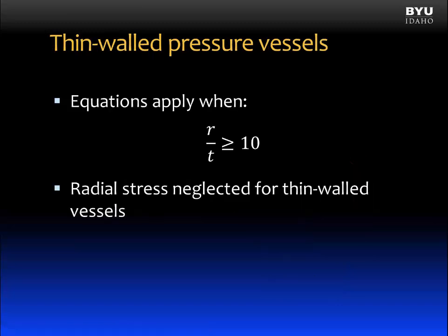These equations apply to thin-walled pressure vessels. To be considered thin-walled, the ratio of the internal radius r to the wall thickness t must be greater than or equal to 10. If it is less than 10, the equations become less accurate. For thin-walled pressure vessels, we can neglect the radial stress.